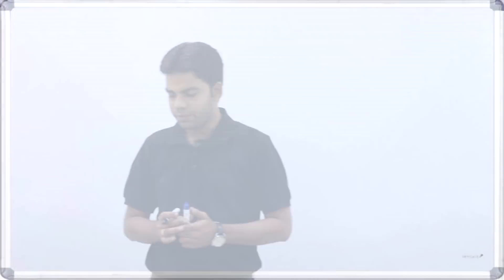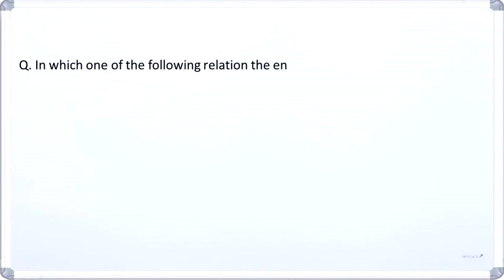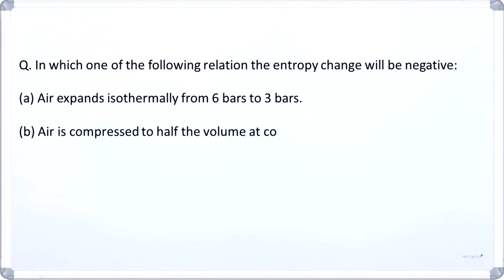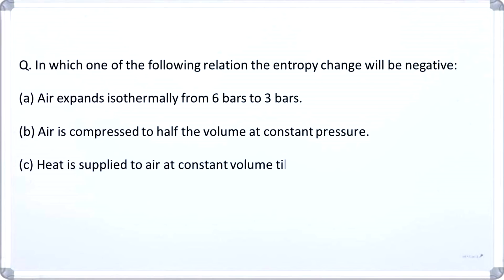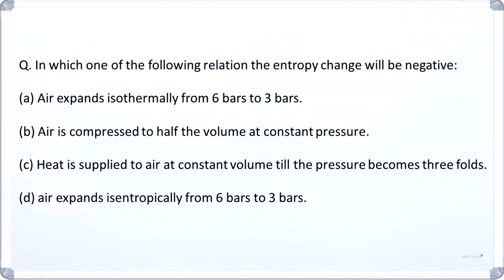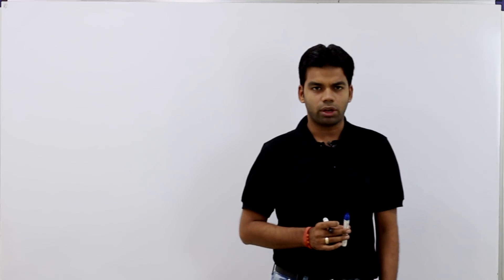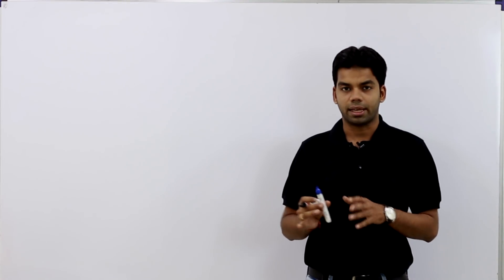There was one question asked: in which of the following relations will the entropy change be negative? First, air expands isothermally from 6 bar to 3 bar. Second, air is compressed to half the volume at constant pressure. Third, heat is supplied to air at constant volume till pressure becomes threefold. And fourth, air expands isentropically from 6 bar to 3 bar.